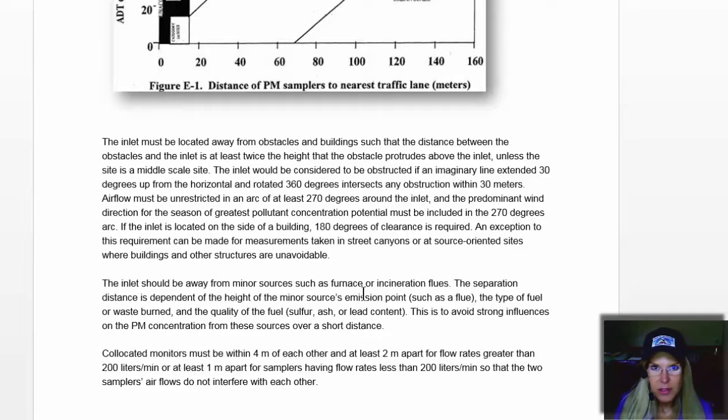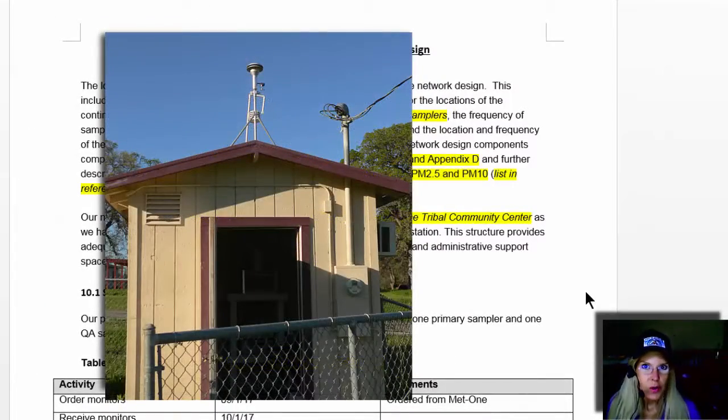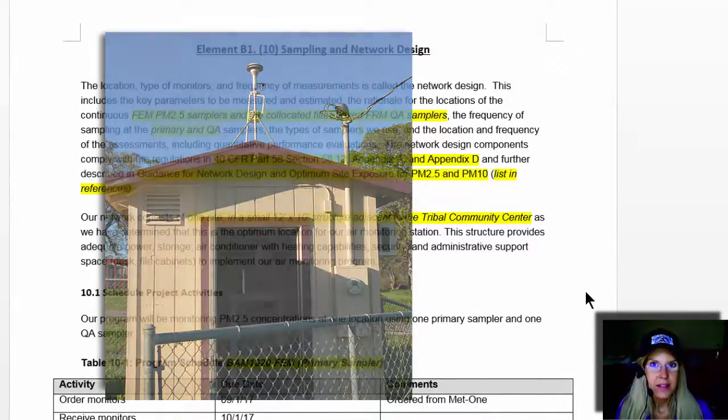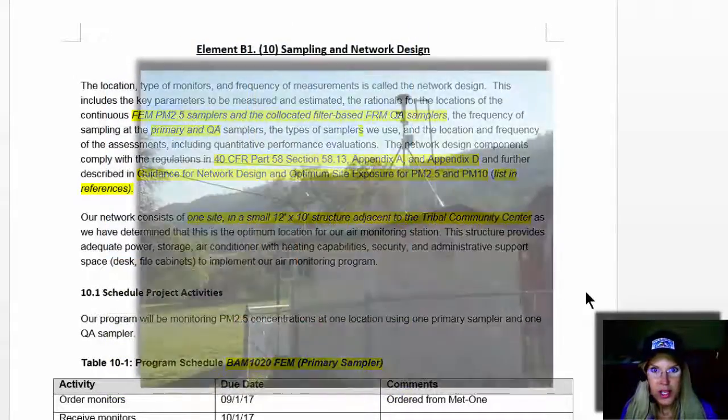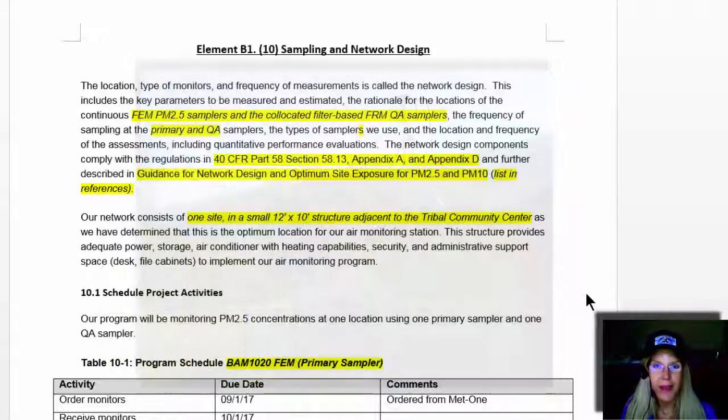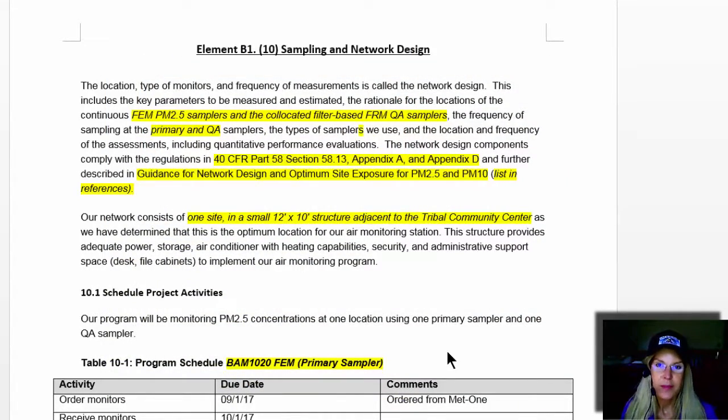If you have co-located samplers, then you need to define the distance between them and state how those meet the requirements. You can insert photographs or maps in this element. Also, photographs of your actual sampler and your probe might be appropriate in this area. Or you can refer back if you had those photographs and maps in a previous section in your QAPP.